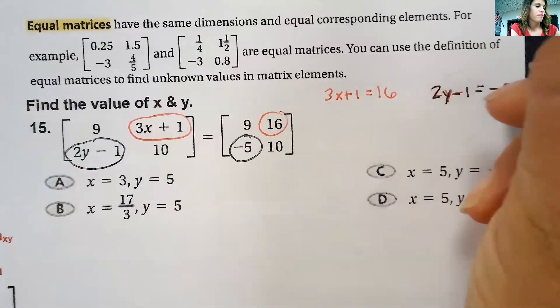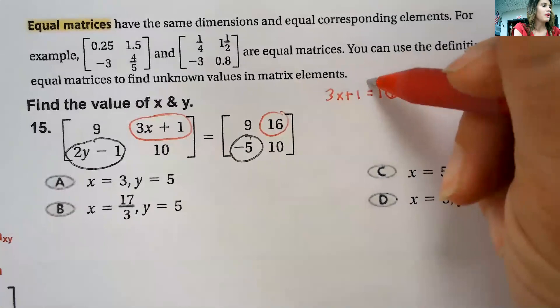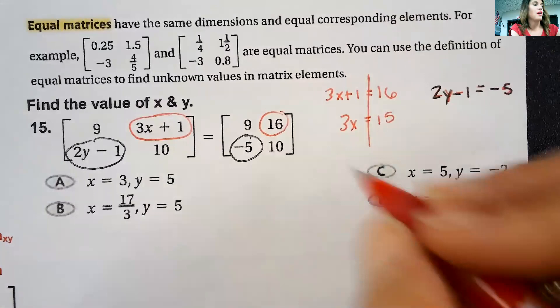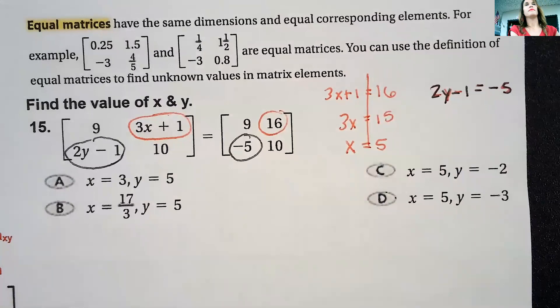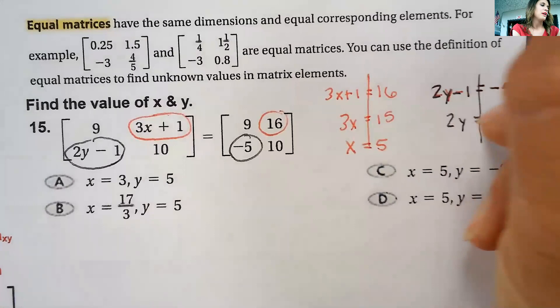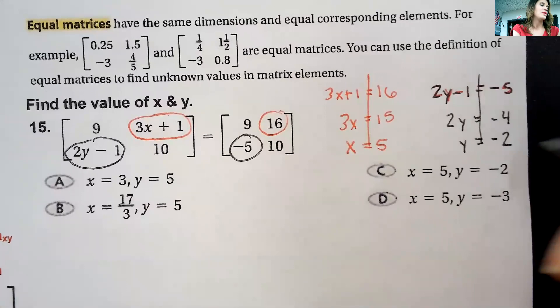Alright, because that 2y - 1 is in the same place as that -5. So then we just have two two-step equations to solve. So get those solved real quick. We'd subtract 1, that'd give me 3x = 15. Then I divide by 3, so x is 5. The other one we'd add 1 over, that'd give me 2y = -4. Divide by 2, y would equal -2. So we have x is 5 and y is -2.